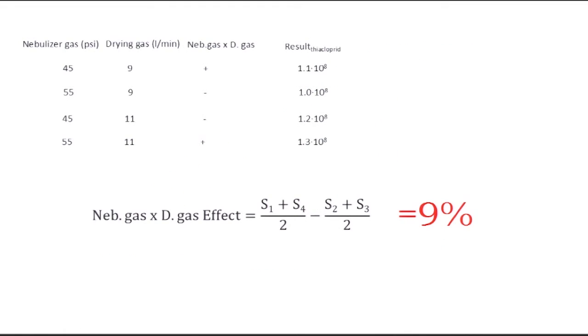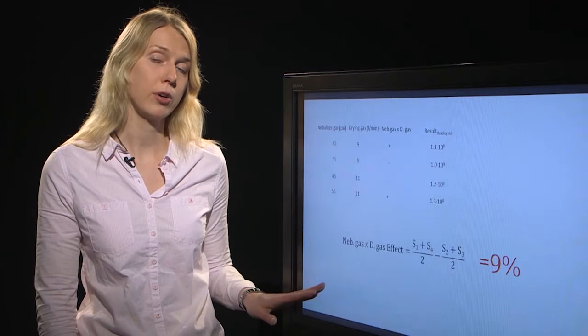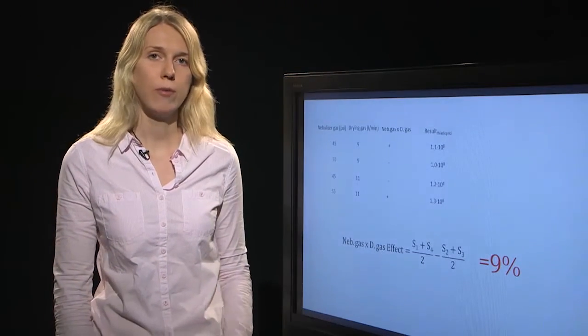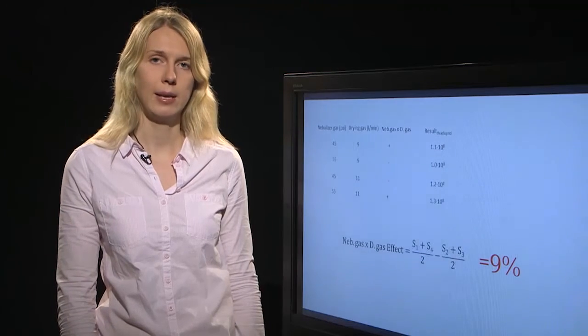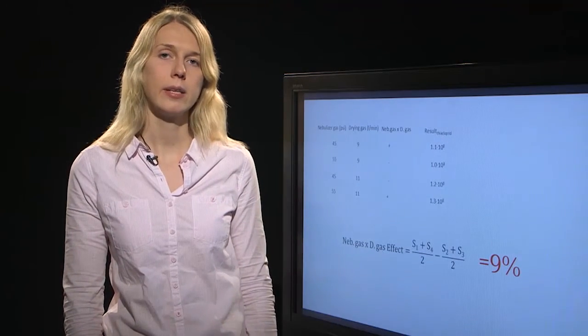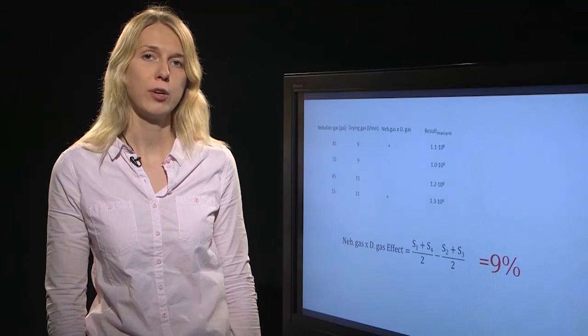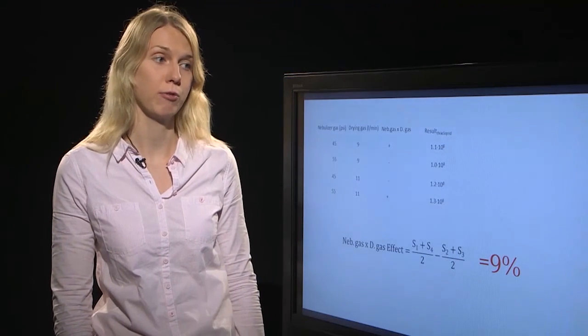Numerically, we can see that if we now combine the interactions that have been observed for the high level and compare it with the ones that have been observed for the interaction low level, that the interaction for nebulizer gas pressure and drying gas flow rate is 9%, which is somewhat higher than the repeatability limit. Meaning that in this case also the interaction of these parameters may be important from the robustness point of view.